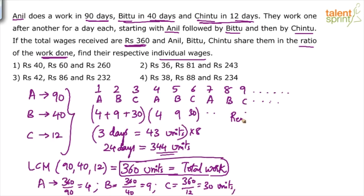What is remaining? The remaining work is 360 minus 344 units, which is equal to 16 units. We have taken 3 days together. So at the end of 24th day, 344 is done. Who will come on 25th day? Again A would come. The cycle will start with A again. So A will come on 25th day. And how many units will he do on 25th day? A's capacity is 4. So he will finish 4. Out of 16, 4 he will finish. What is remaining? 12 is remaining.